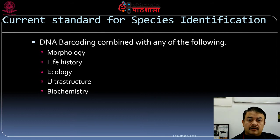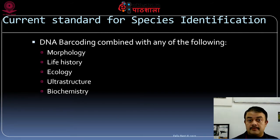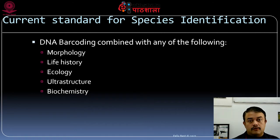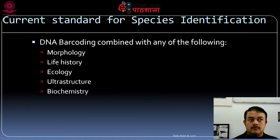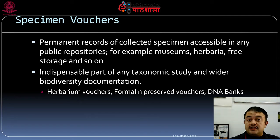The current standard for species identification uses a combined polyphasic approach — evidence from multiple sources: morphology, life history, ecology, ultrastructure, and biochemistry. DNA barcoding alone is not sufficient; you need multiple lines of evidence. For example, the ultrastructure of flagella or chloroplasts can inform better species identification. This polyphasic approach is the gold standard.